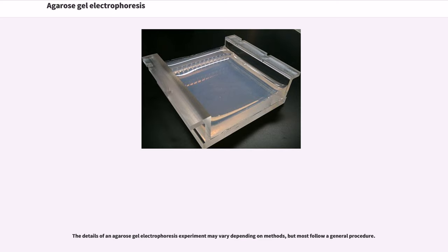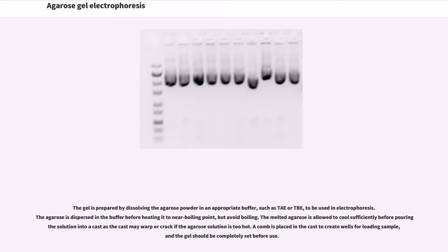The details of an agarose gel electrophoresis experiment may vary depending on methods, but most follow a general procedure. The gel is prepared by dissolving the agarose powder in an appropriate buffer, such as TAE or TBE. The agarose is dispersed in the buffer before heating to near boiling point, but avoid boiling. The melted agarose is allowed to cool sufficiently before pouring into a cast, as the cast may warp or crack if the solution is too hot. A comb is placed in the cast to create wells for loading sample, and the gel should be completely set before use.